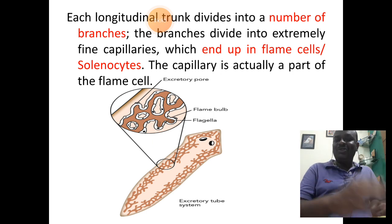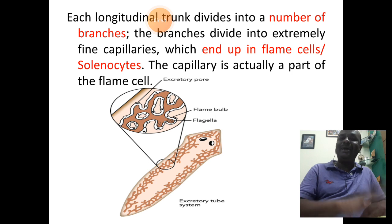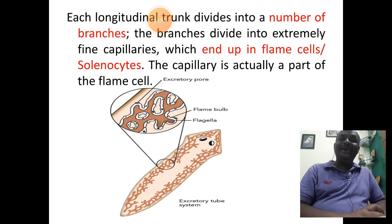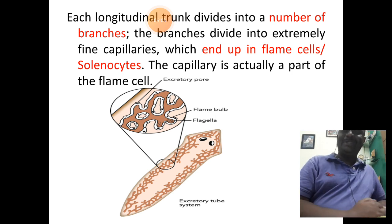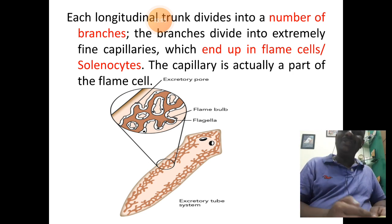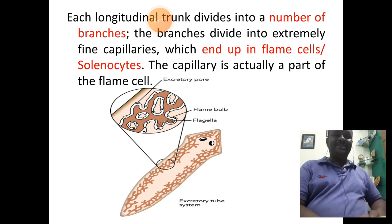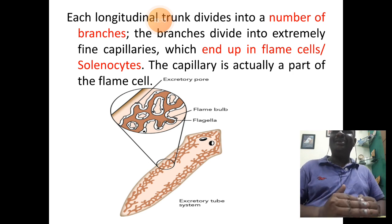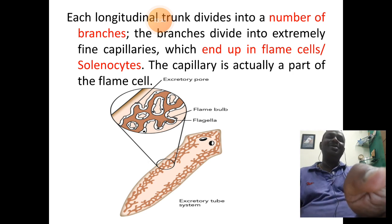As mentioned earlier, the longitudinal trunk divides into a number of branches. Branches moving towards the inner body parts end in structures called flame cells or solenocytes. These flame cells or solenocytes are the actual structures that involve the removal of excretory waste from the mesenchyme cells. Hence, the actual units of the excretory system are the flame cells or solenocytes.